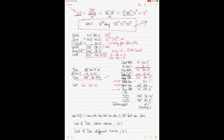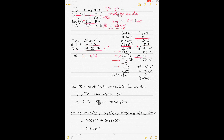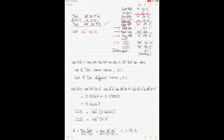That's my true altitude of 41° 23.6'. Subtracting from 90° gives my true zenith distance (TZD) of 48° 36.4'. Now I also need the calculated zenith distance (CZD). Let me show you the formula using a scientific calculator.